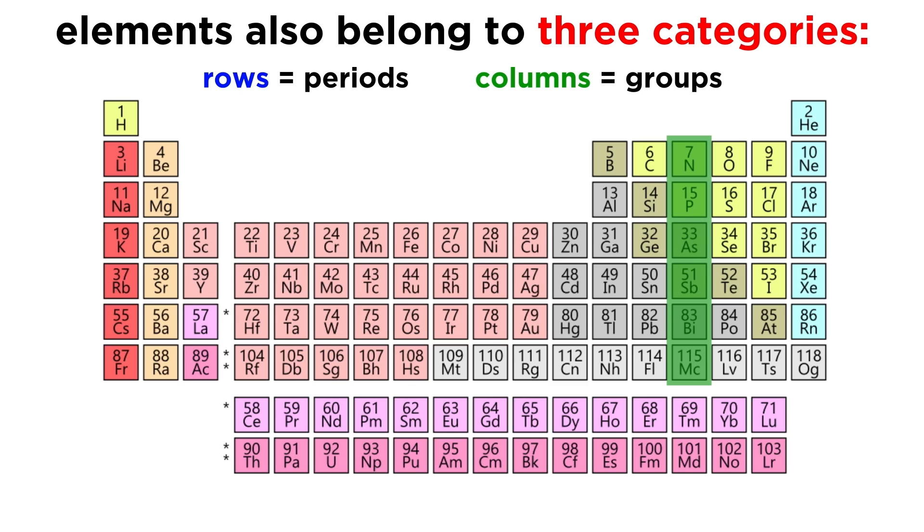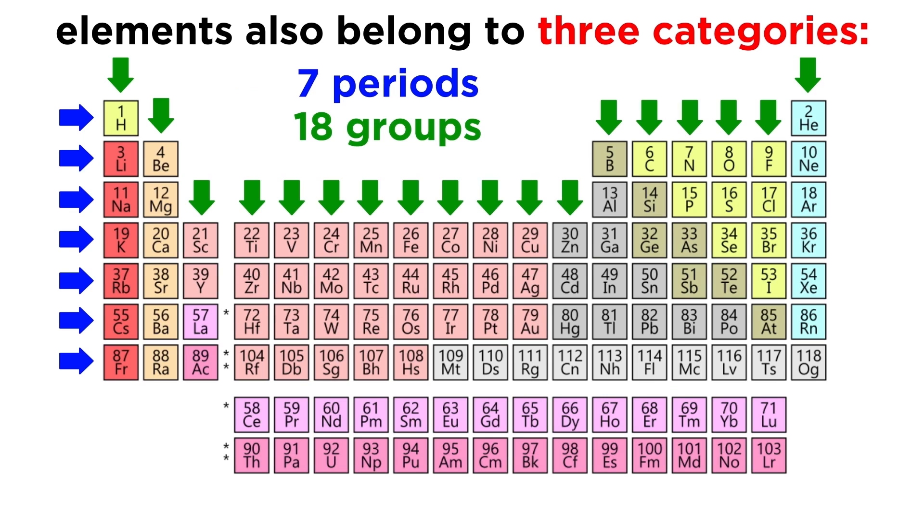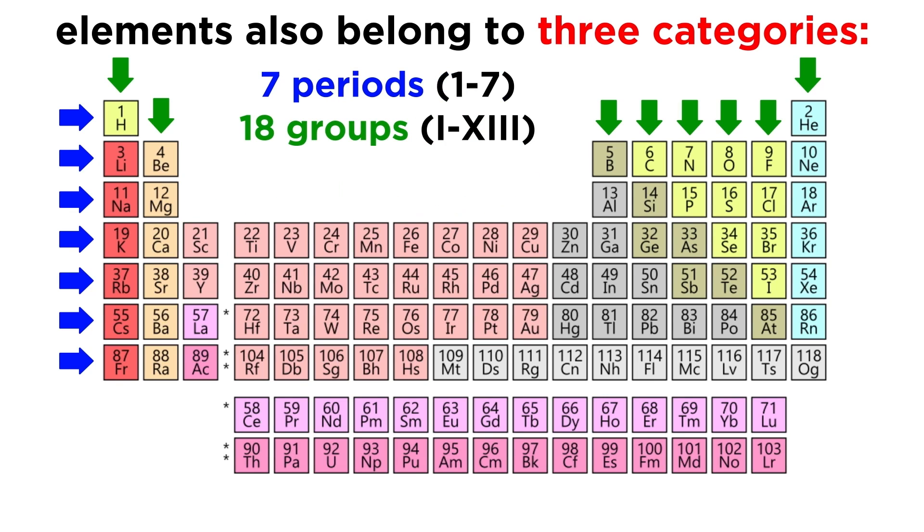That means that elements in the same column, or group, are the ones that will display similar behavior. There are 7 periods and 18 groups. It used to be the case that the groups were numbered 1 through 8, using Roman numerals and skipping over the section in the middle, but now it is more typical that we use the numerical symbols we see here.